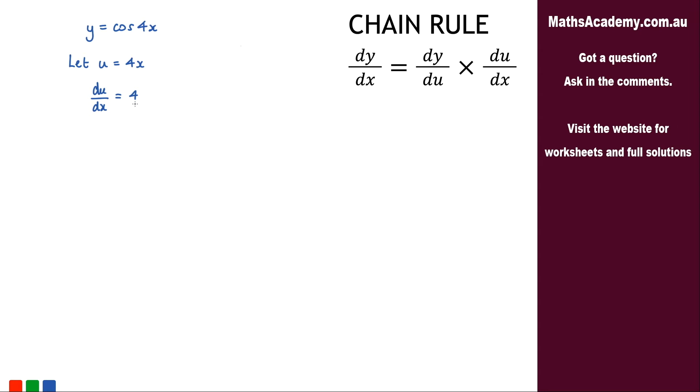So making that substitution, what we'd have is y equals cosine of u. And if we differentiate that, dy by du is equal to, well differentiating cosine gives us negative sine, so negative sine of u.